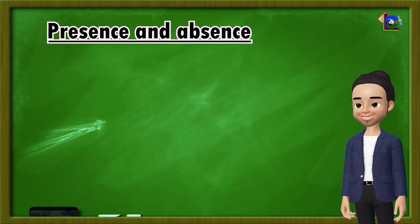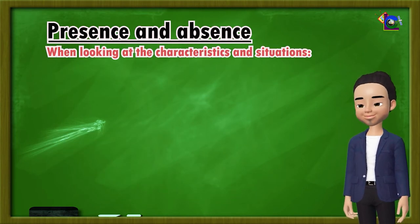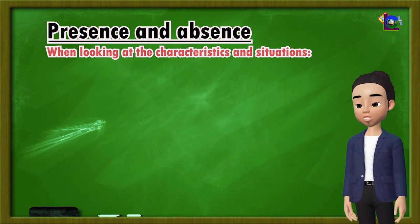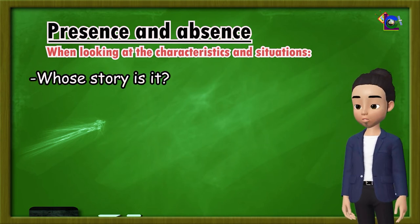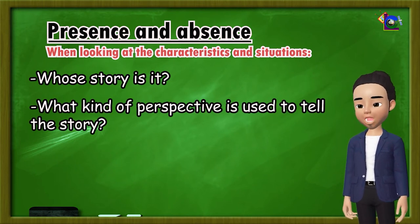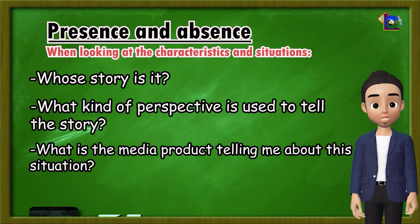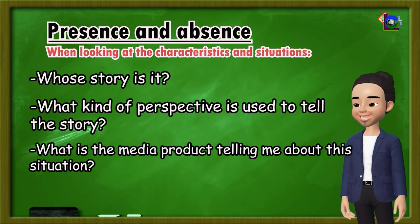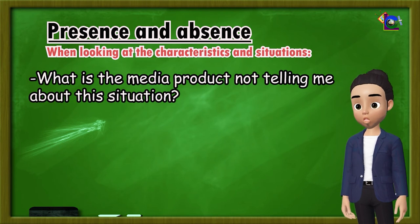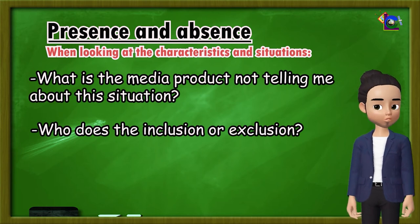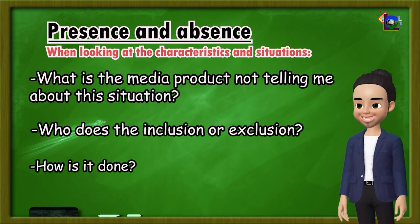Third is presence and absence. When looking at the characteristics and situations, ask yourself: What kind of perspective is used to tell the story? What is the media product telling me about this situation? What is the media product not telling me about this situation? Who does the inclusion or exclusion, and how is it done?